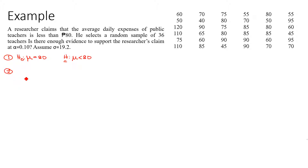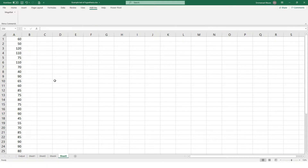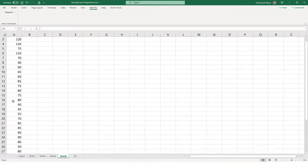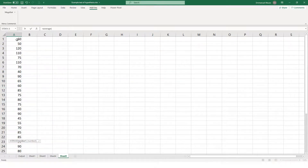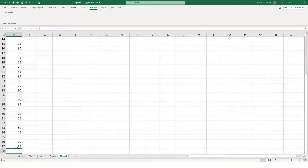The formula is Z equals sample mean minus population mean, all over population standard deviation divided by the square root of n. We compute the sample mean in Excel by averaging all 36 values, which equals 75.